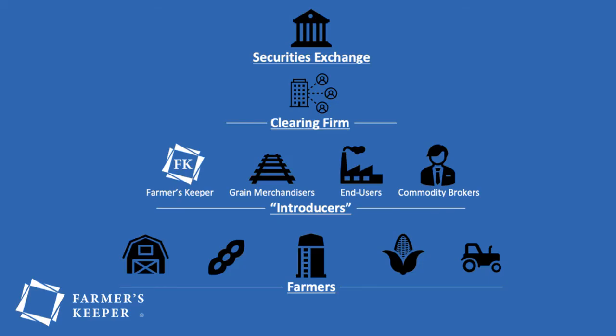Depending on our place in grain market hierarchies, it's easy to only be familiar with the tiers directly above or below us. This market hierarchy chart shows a high-level view of the flow of grain sales from the producers themselves all the way to the exchanges. Markets typically only have one or two exchanges, like the Chicago Board of Trade or the Chicago Mercantile Exchange.